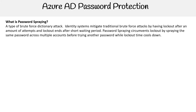Identity systems mitigate traditional brute force attacks by having lockout — after a certain amount of attempts, the user is locked out and has to wait a short period of time before they can try their password again. For example, five attempts and then you're locked out for 30 minutes. Password spraying circumvents lockout by spraying the same password across multiple accounts before trying another password while the lockout time cools down or resets.